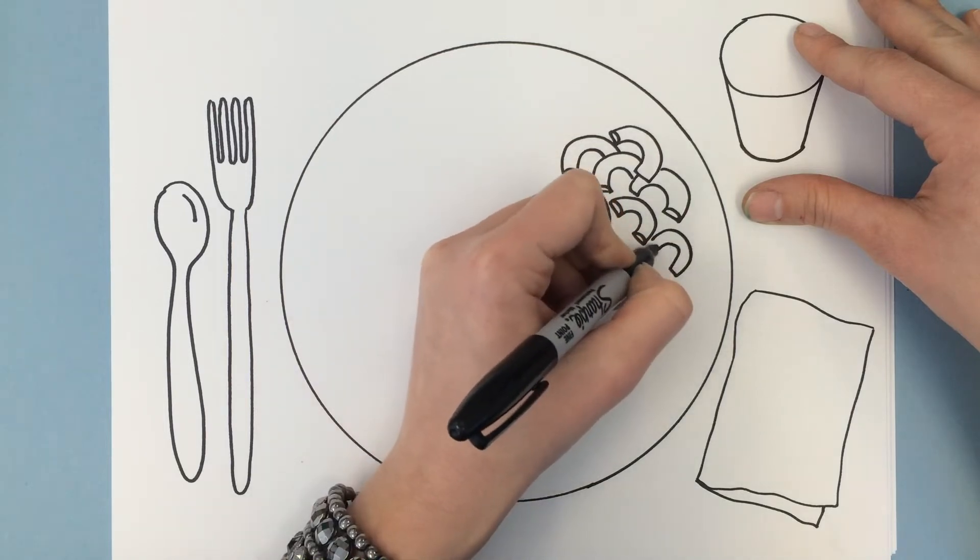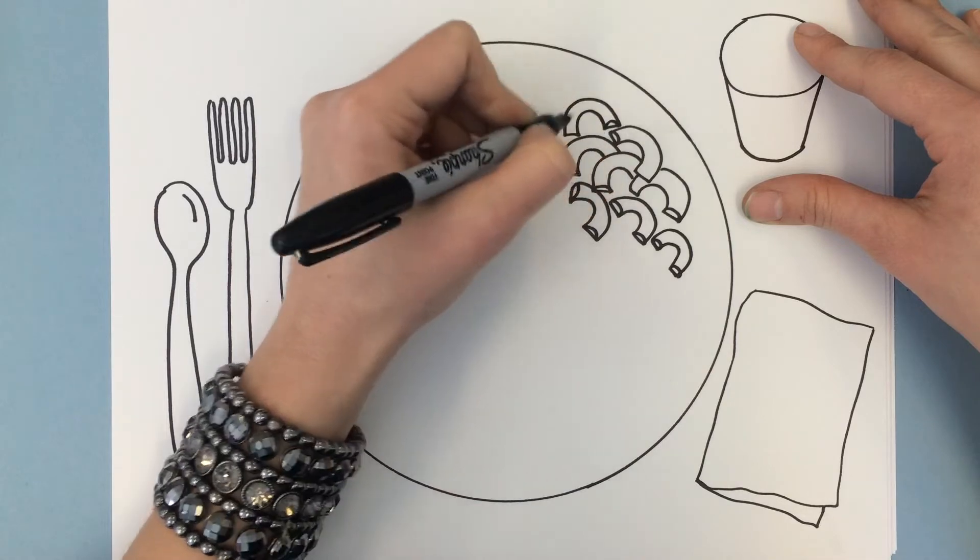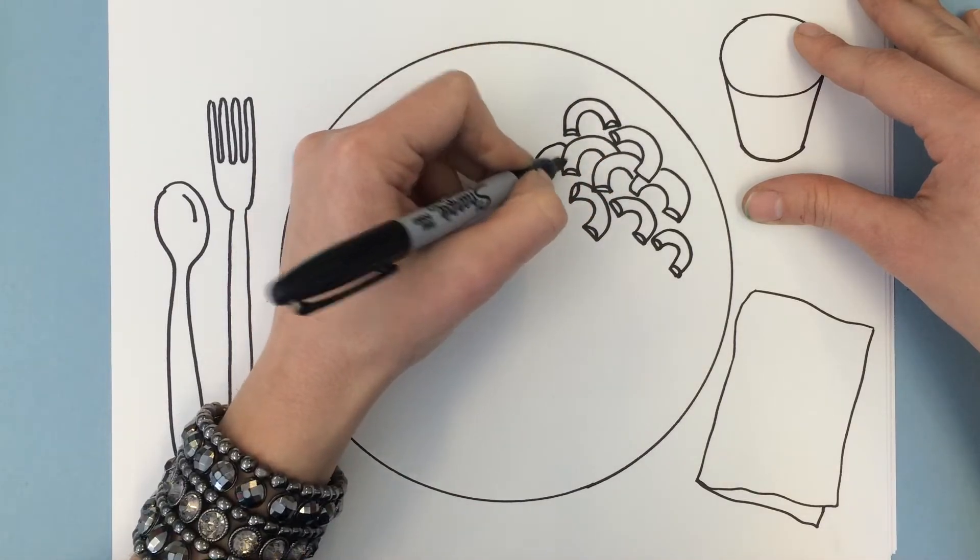These are elbow noodles. That's what these are called because they're kind of curved like your elbow. Elbow macaroni. Sometimes macaroni has different shapes of noodles.